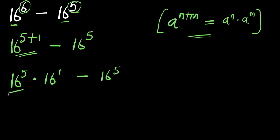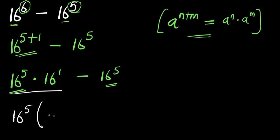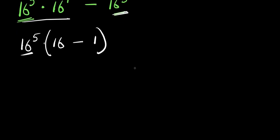Now, because we have 16 to the power of 5 here and there is 16 to the power of 5 here, we can factor that out. So, we have 16 to the power of 5 times the quantity in the brackets. Dividing through by 16 to the power of 5, we have 16 minus 1, which gives you 15.